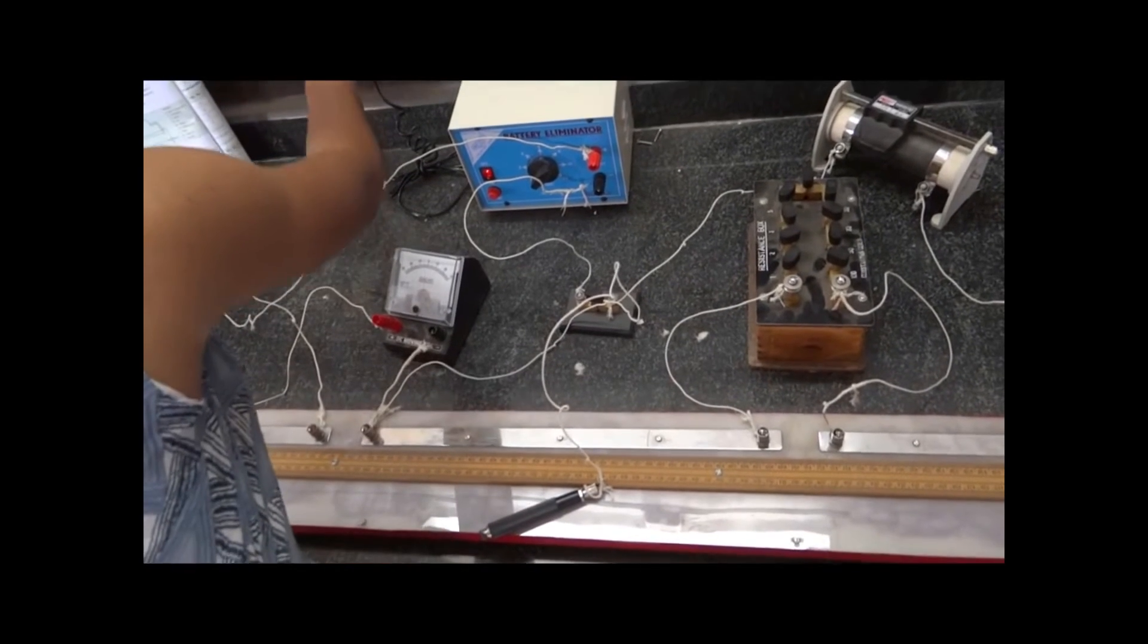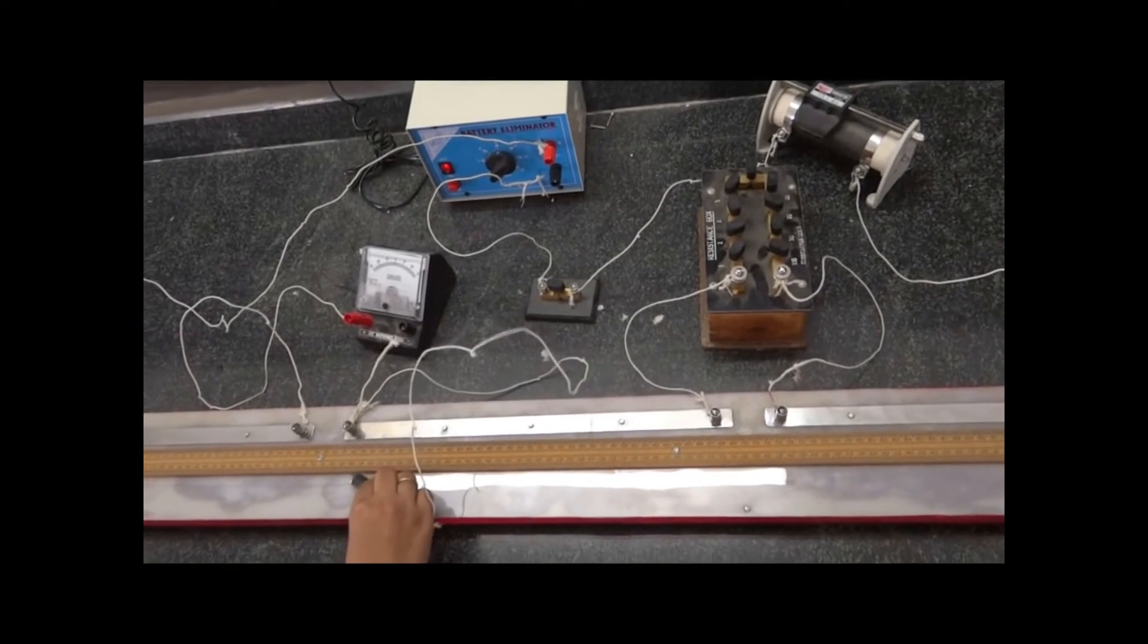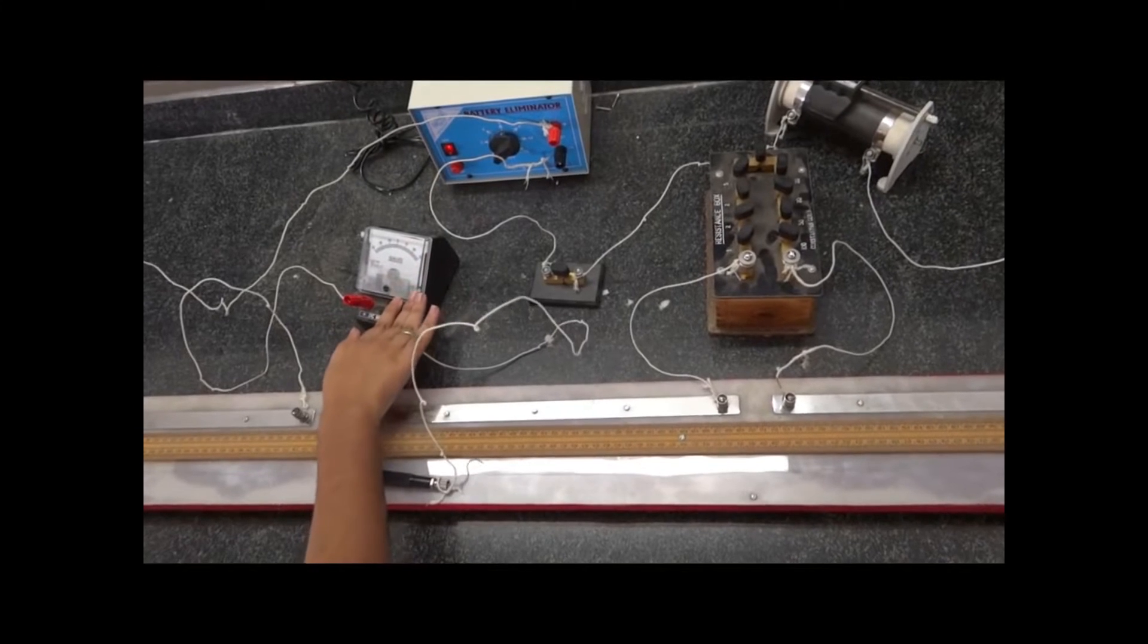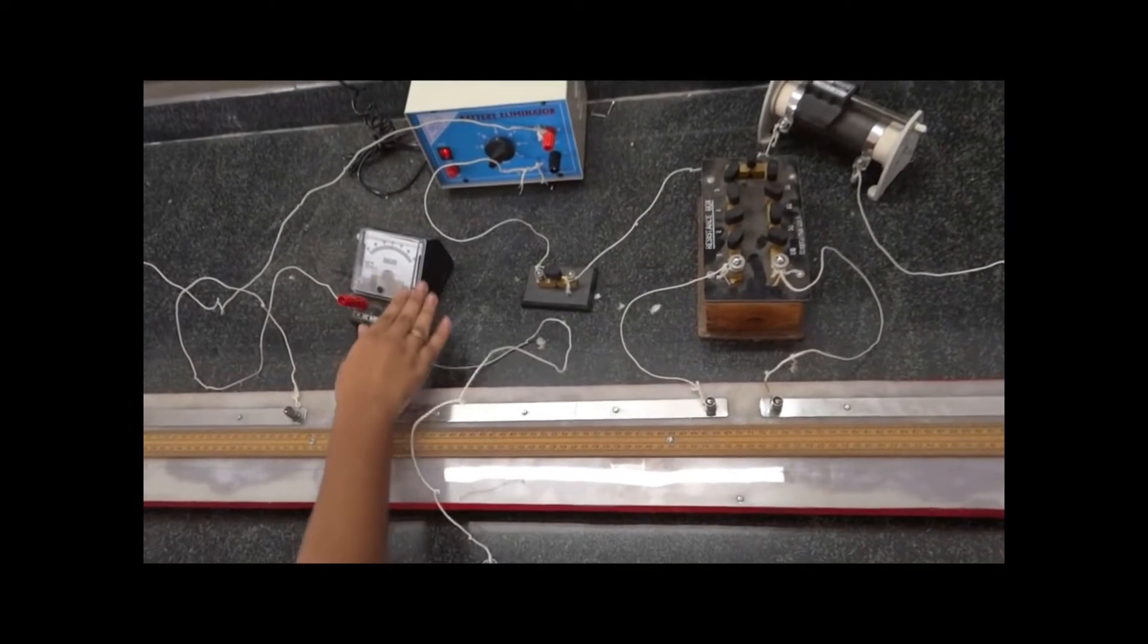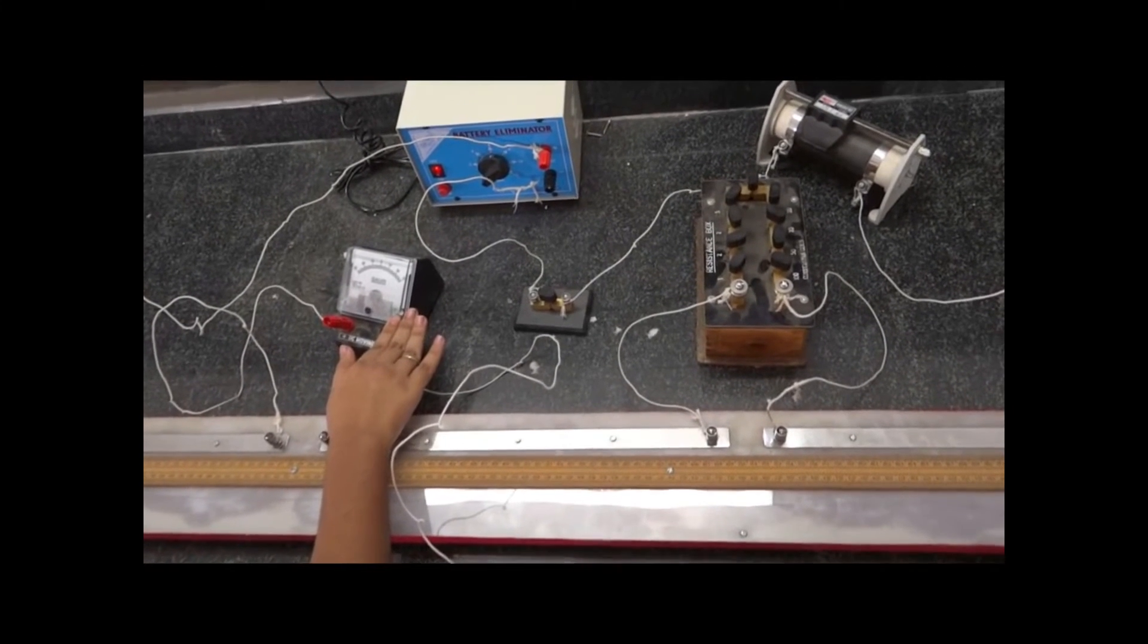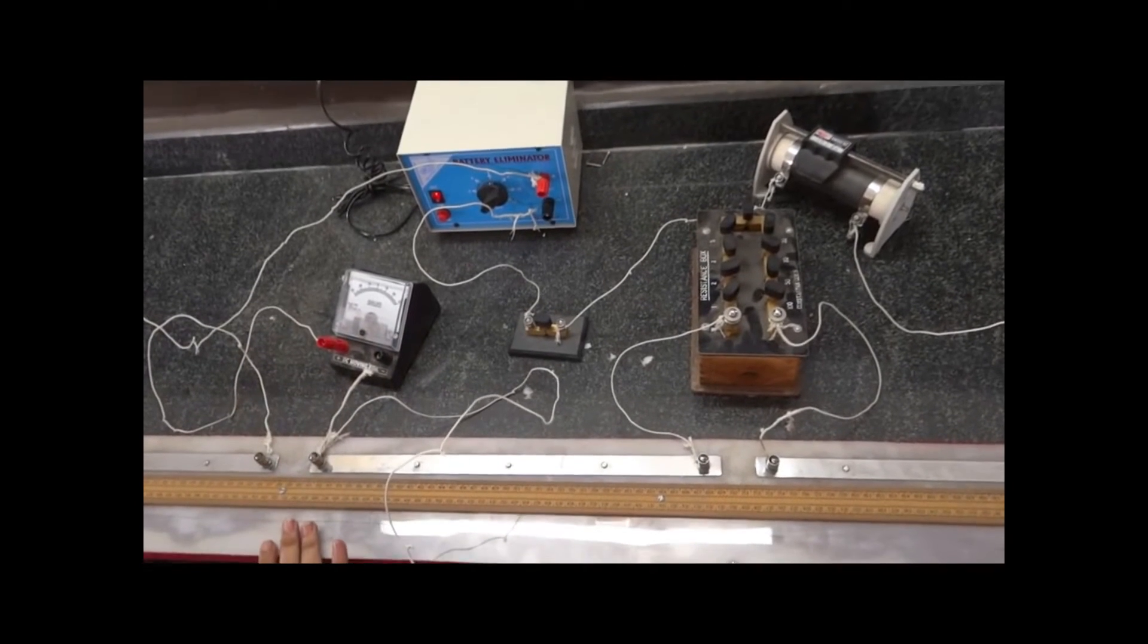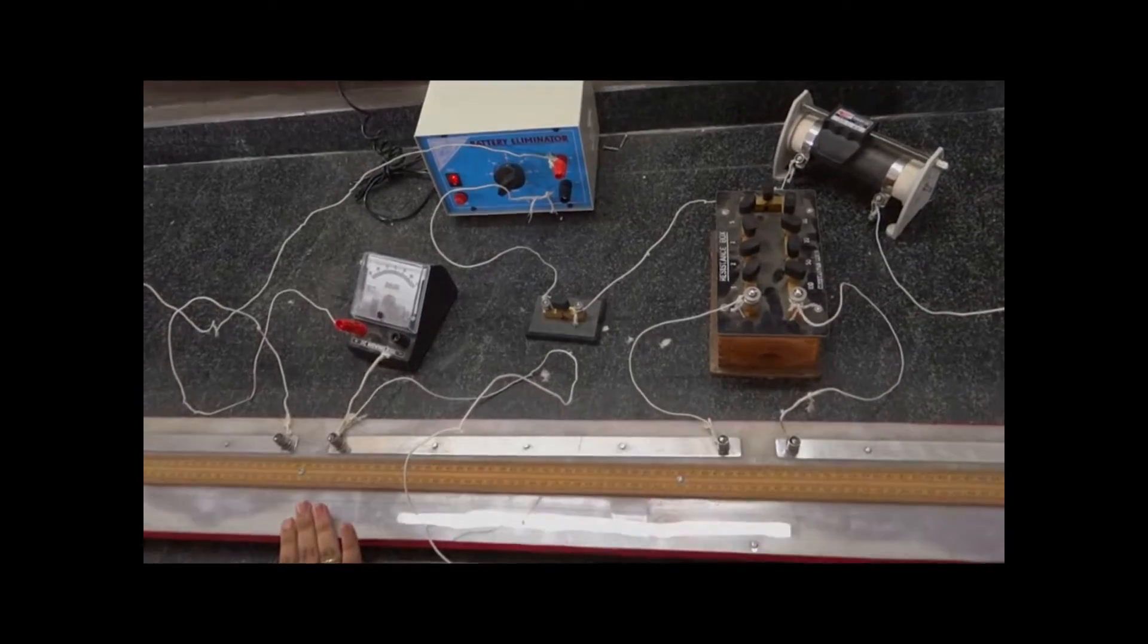Now we switch on the plug key. When the jockey is touched on the wire, the galvanometer deflection either increases or decreases. Move the jockey along the wire until the galvanometer deflection is restored to its original value. This is the null point or balance point where the galvanometer reading remains constant when the jockey is touched or removed from the wire.